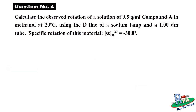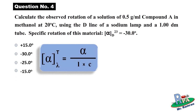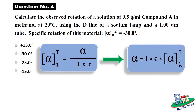Now for the last question, question number four: calculate the observed rotation of a solution of 0.5 grams per mL of compound A in methanol at 20 degrees Celsius, using the D line of a sodium lamp and a one-decimeter tube. The specific rotation of this material is −30 degrees. In this question you are asked to calculate the observed optical rotation, so rearrange the formula accordingly, calculate it, and leave your answer in the comment section below.